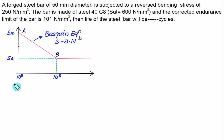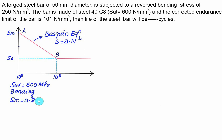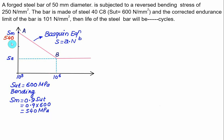We have SUT equal to 600, and it's a case of bending. For bending, the material strength SM = 0.9 × SUT = 0.9 × 600 = 540 MPa. So SM = 540. Endurance strength SE is given as 101, which corresponds to 10⁶ cycles. And the fatigue strength SF is given as 250 MPa.